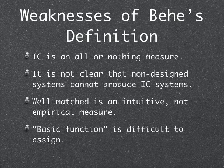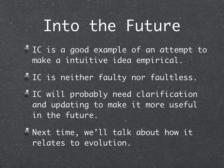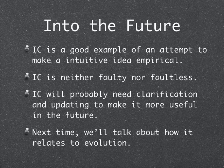Irreducible complexity is also an all-or-nothing measure — it's either irreducibly complex or not, with no gradations in this definition. There are also several parts of the definition which are not fully empirical, such as what 'well-matched' means and what the 'basic function' is — these can be argued about with no definitive way to determine them. However, irreducible complexity has contributed to intelligent design in several interesting ways. It is a good example of an attempt to make an intuitive idea — wholism — into an empirical one, bridging the gap between design and science. Irreducible complexity is neither faulty nor faultless; it has several strengths and weaknesses, and will probably need clarification and updating to be more useful for scientific endeavors in the future. Next time, we'll talk about how it relates to evolution.